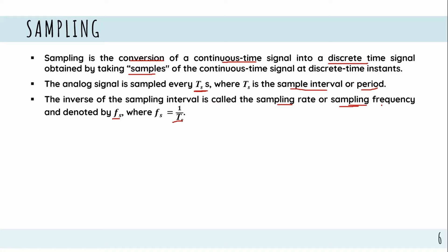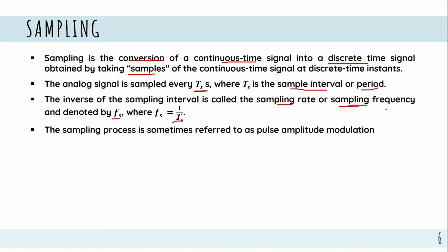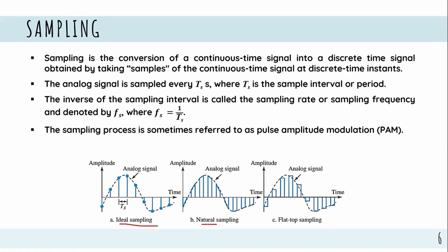Now let's talk about the sampling methods. There are three sampling methods: ideal sampling, natural sampling, and flat-top sampling. Ideal sampling produces a spike or impulse at each sample point. Natural sampling connects the sampled values following the shape of the original signal.